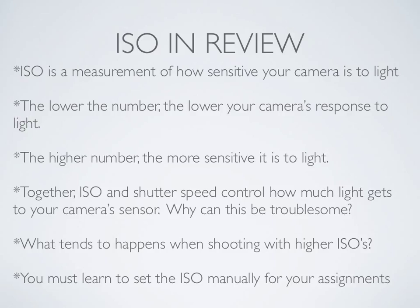So, ISO in review — what do you need to know about ISO? ISO is a measurement of how sensitive your camera is to light. The lower your ISO number, the lower your camera's response to the light. The higher ISO number means your camera is more sensitive to the light. Together, ISO and shutter speed control how much light gets to your camera sensor. You need to know why higher ISO and shutter speed can get you into trouble, and what tends to happen when shooting with higher ISOs. Finally, you must learn to set the ISO manually for all of your assignments. That's a quick breakdown of ISO, in companion with the lecture last week over aperture and shutter speed.